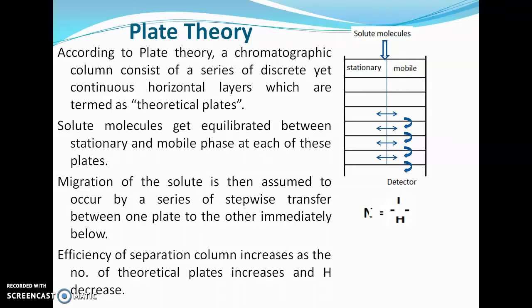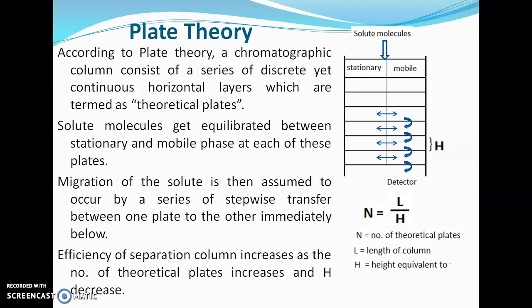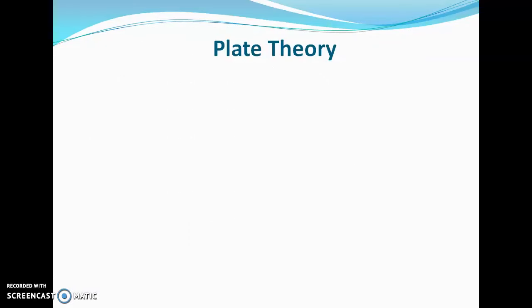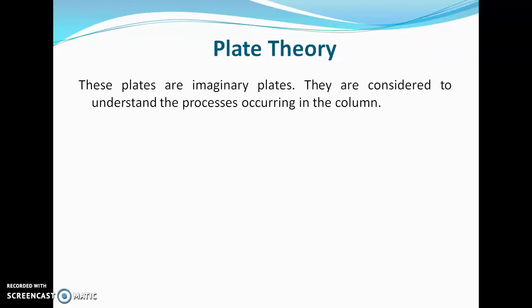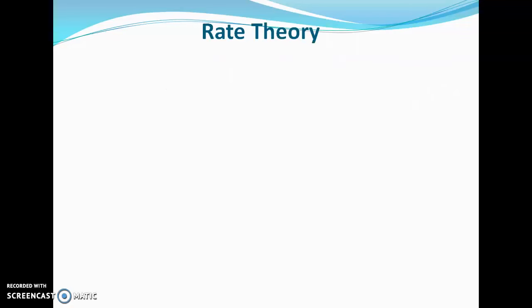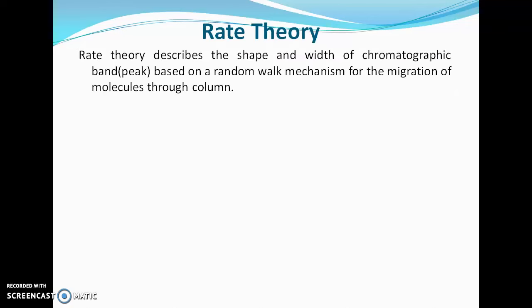There is a formula for calculating theoretical plates: N = L/H, where N is the number of theoretical plates, L is the length of the column, and H is the height equivalent to a theoretical plate (HETP). One important point: these plates are imaginary — they are considered only to understand the processes occurring within the column.